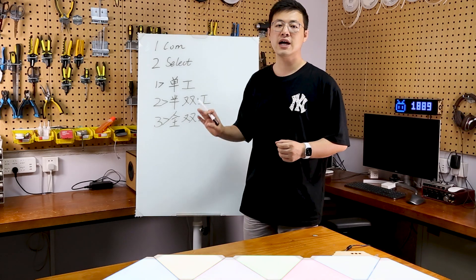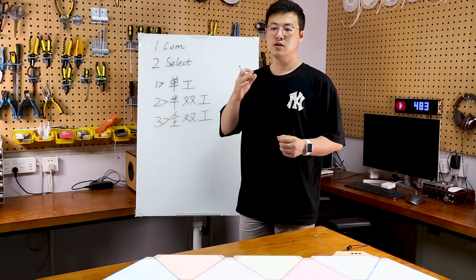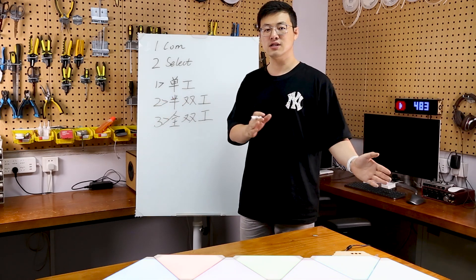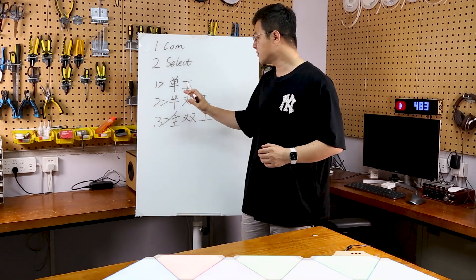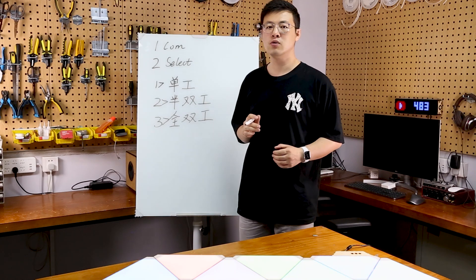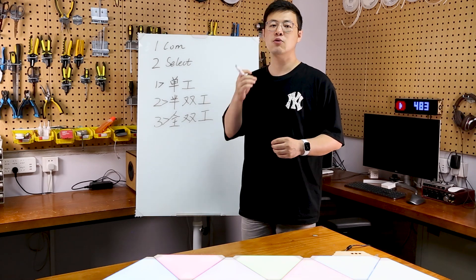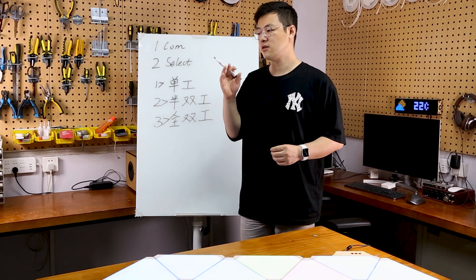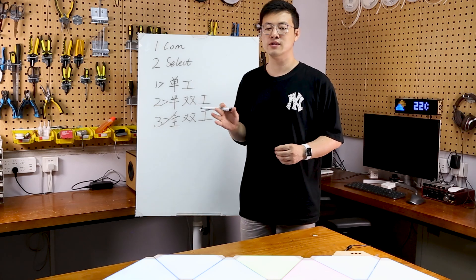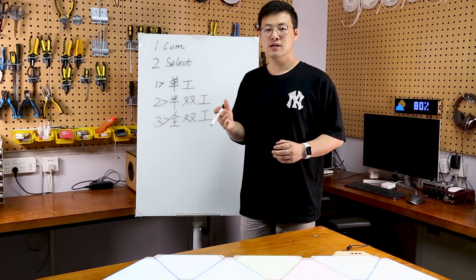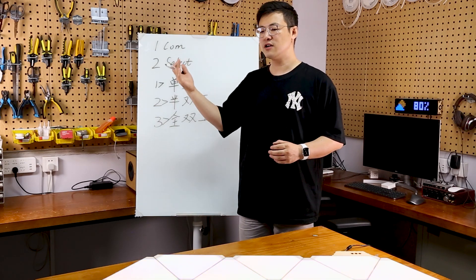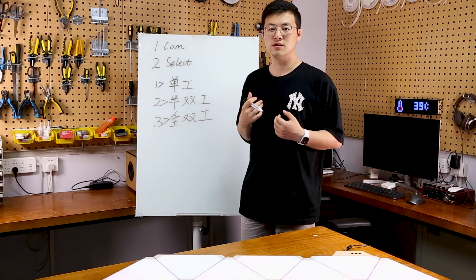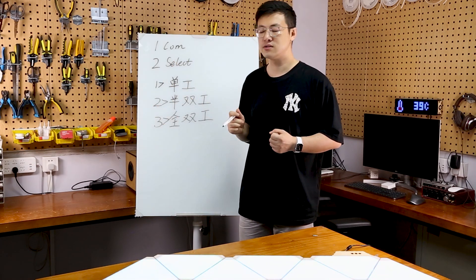那第二种和第三种都是双工通讯，它意味着两者之间既可以发消息也可以收消息。它们的区别在于：半双工通讯，就是在我发消息的时候，我是不可以同时接收消息。这就类比于我们的对讲机。当我在说话的时候呢，另一方只能听；另一方发消息的时候呢，我只能听。这就是半双工通信。